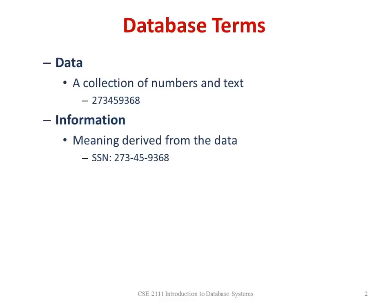The first term is the word data. Data is a collection of numbers and texts. Information is the meaning derived from the data. For example, the number 273-459-368 does not give you any information. But when I tell you that it's a social security number, now you have something to work with — you know what that information is.